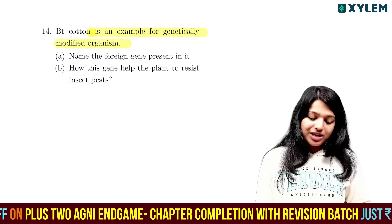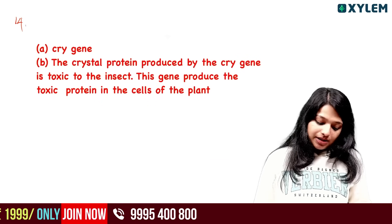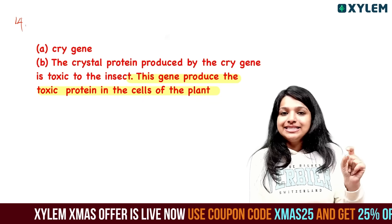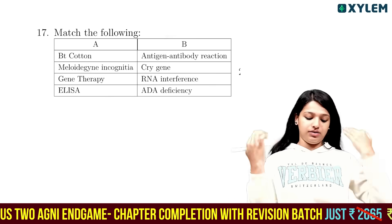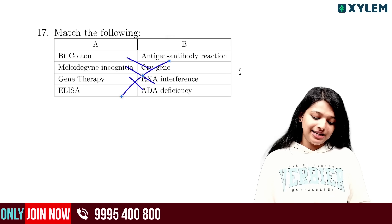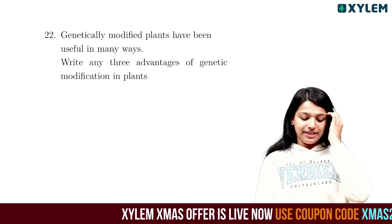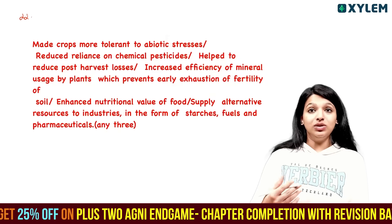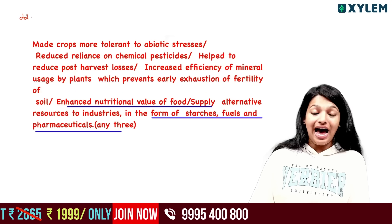BT cotton is an example of a genetically modified organism. Name the foreign gene present: Cry gene. How does this gene help the plant resist insects? The protein produced by Cry gene is toxic to insects, making the plant insect-resistant. In BT cotton and corn, the Cry gene and also RNA interference is used. Genetically modified plants have been useful in many ways. Three advantages of genetic modification: tolerance to abiotic stress (drought), reduced use of chemical pesticides, and reduced crop losses. GMOs also provide improved nutritional forms and can be used for starch, fuel, and pharmaceuticals.